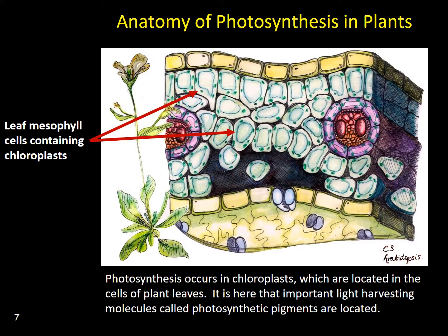In plants, the majority of photosynthesis occurs in leaf mesophyll cells. These cells contain chloroplasts, which contain photosynthetic pigments such as chlorophyll. These amazing molecules are capable of harvesting the energy from visible light from the sun, which is later converted into chemical energy stored in the bonds of organic molecules.